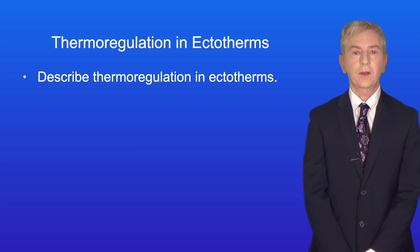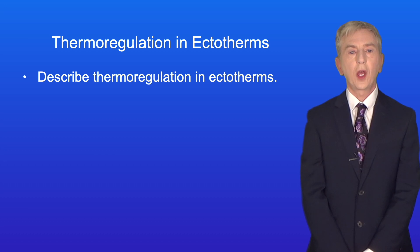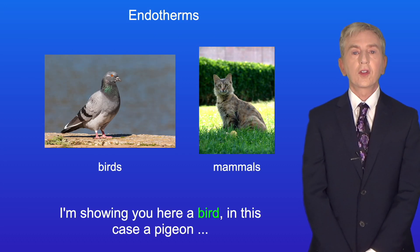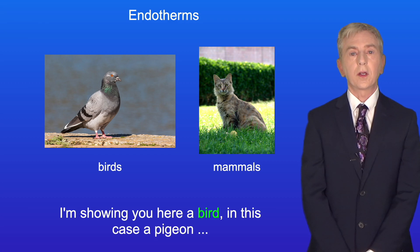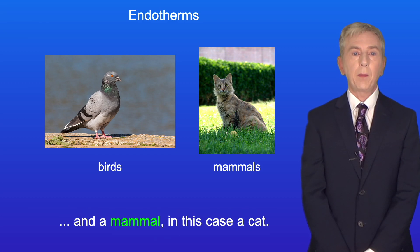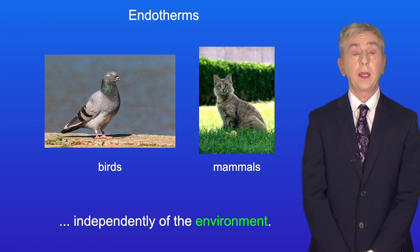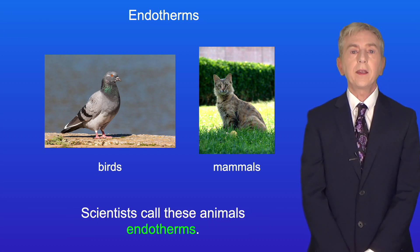Hi and welcome back to Free Science Lessons. By the end of this video, you should be able to describe thermoregulation in ectotherms. I'm showing here a bird, in this case a pigeon, and a mammal, in this case a cat. Birds and mammals can regulate their core body temperature independently of the environment. Scientists call these animals endotherms.